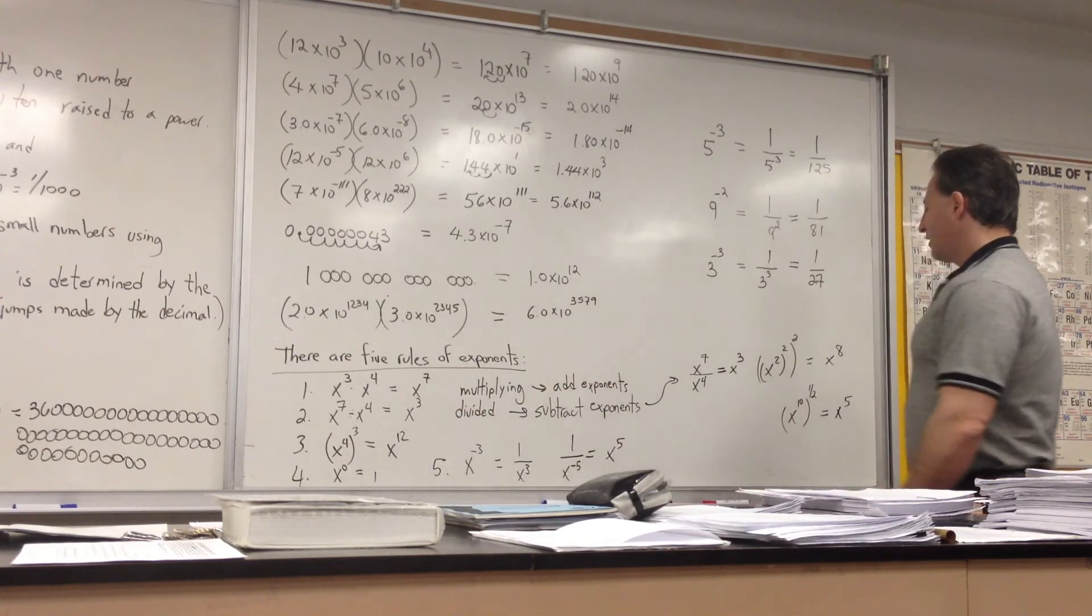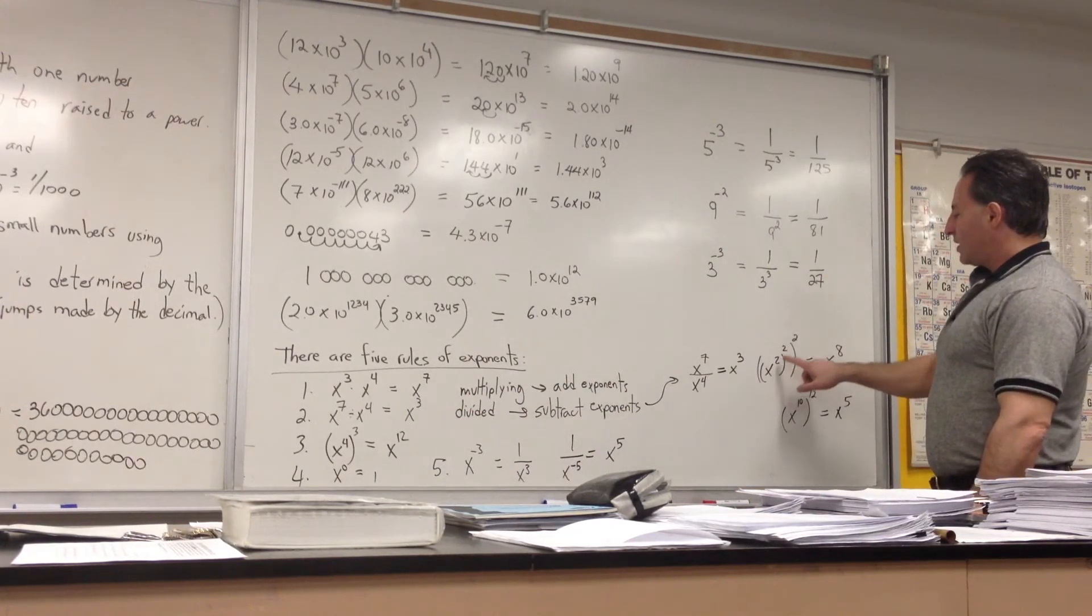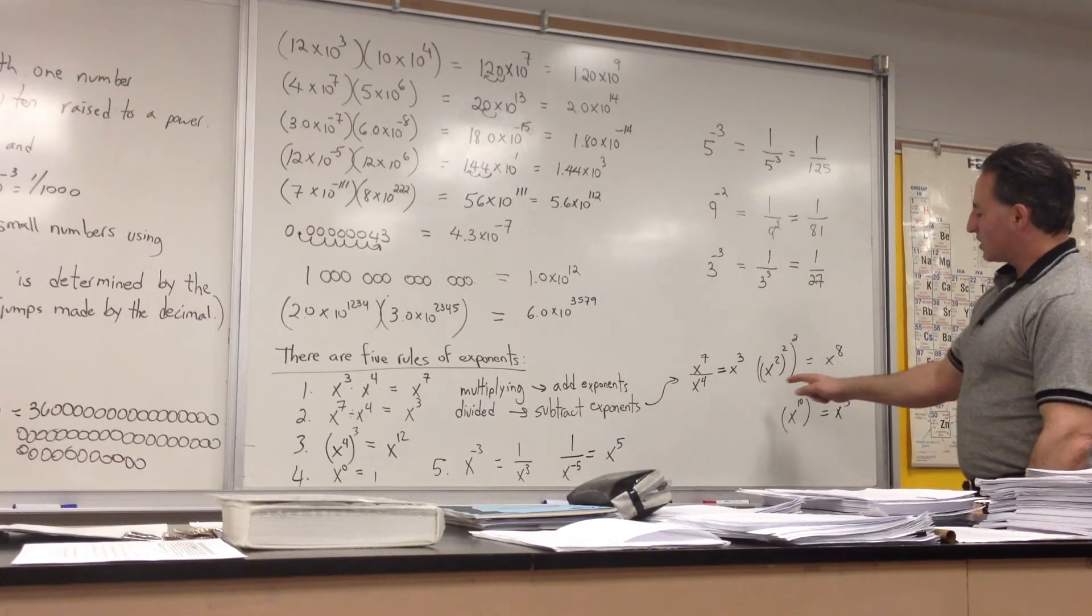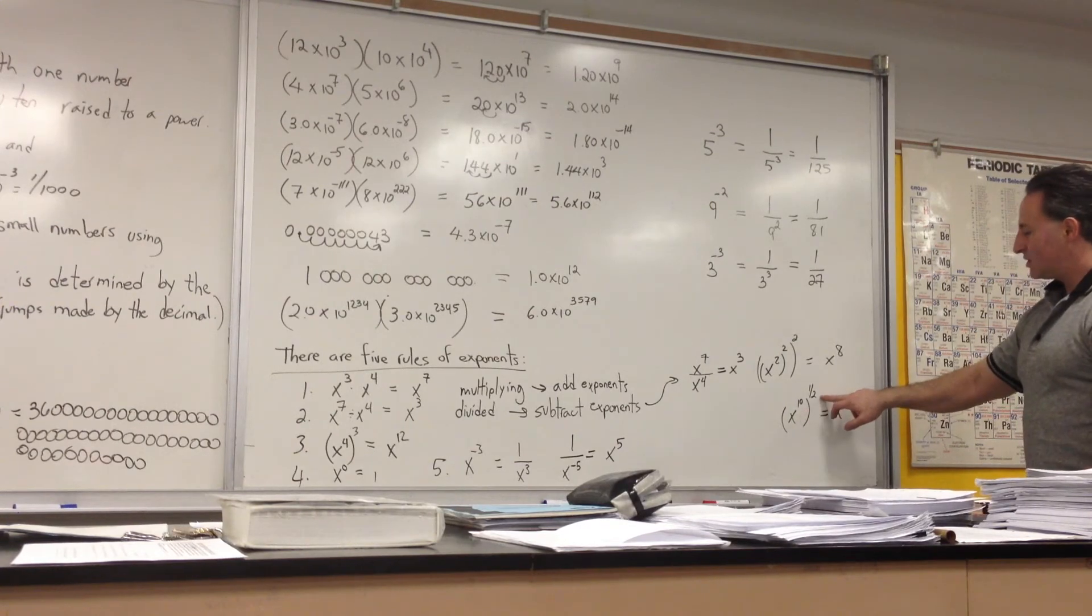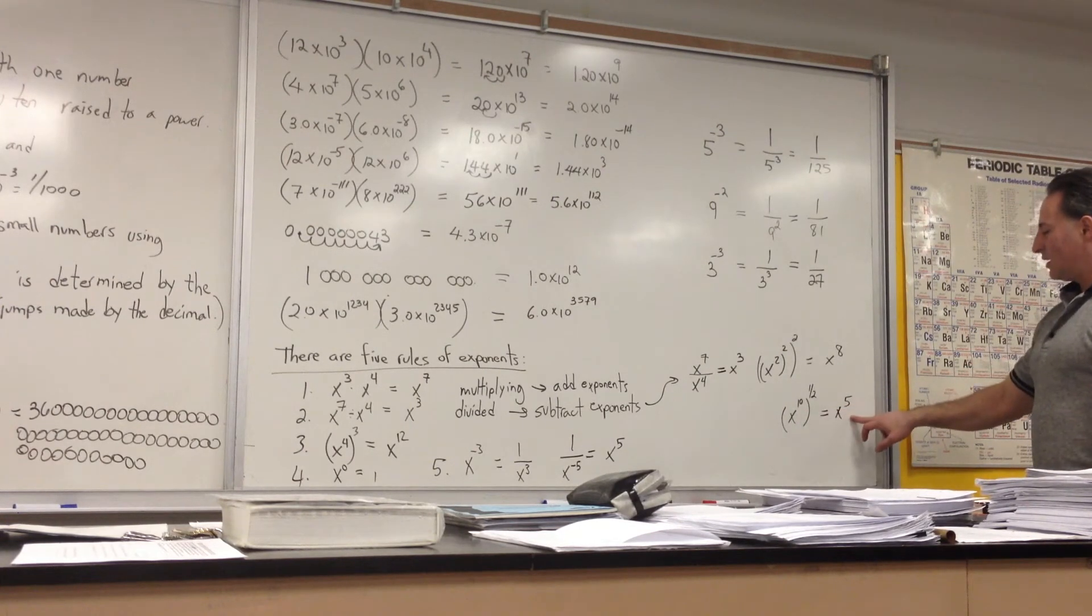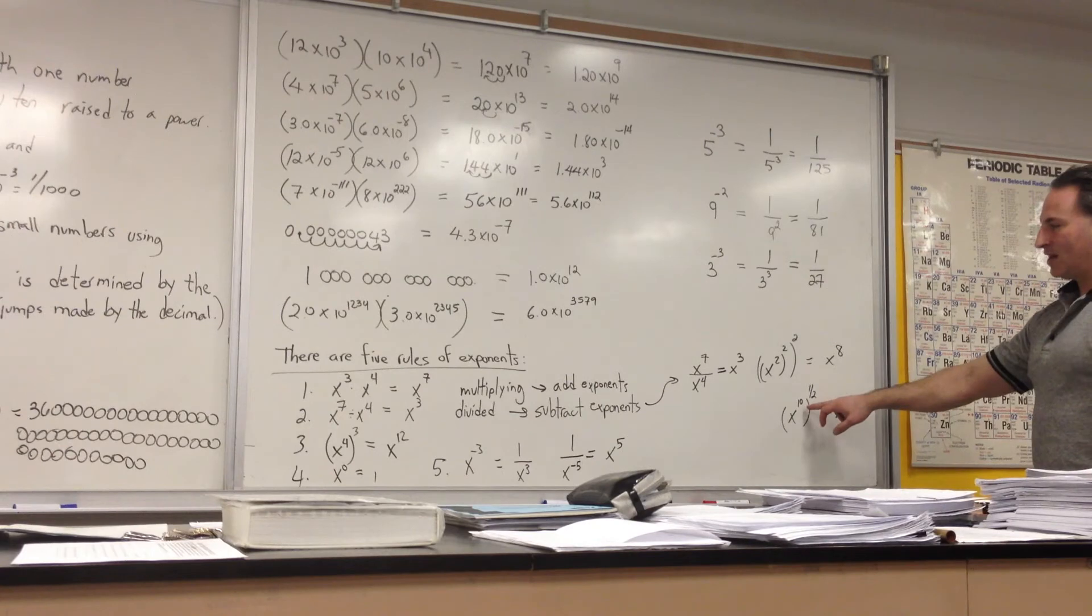I have another example here. If you have x squared raised to the power of 2 raised to the power of 2, then you multiply through all the exponents and you get x to the 8. x to the 10 raised to the power of 1 half is like x to the 5, because 1 half times 10 gives you 5.